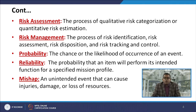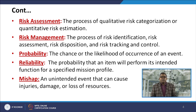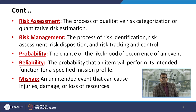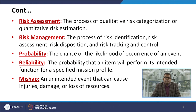Once we analyze hazard and risk, there is the concept of risk assessment — a process of qualitative risk categorization or quantitative risk estimation — so we can analyze the economic loss and impact of that particular risk to the plant and environment. Risk management is the process of risk identification, risk assessment, risk disposition, and risk tracking and control. Probability is the likelihood of occurrence of an event. Reliability is the probability that an item will perform its intended function for a specified mission. A mishap is an unintended event that can cause injuries, damage, or loss of resources.